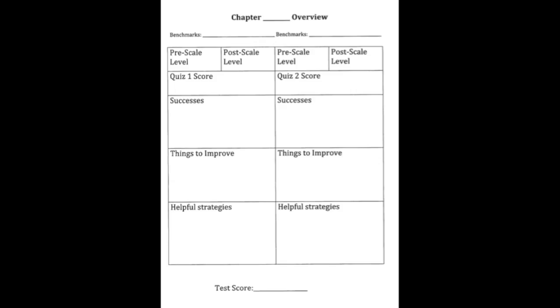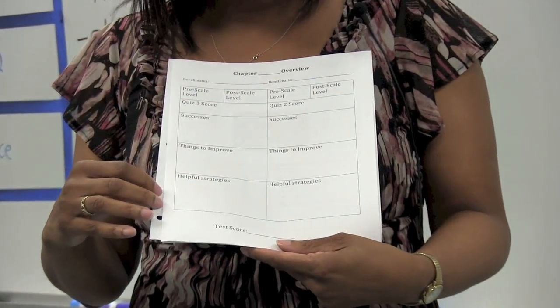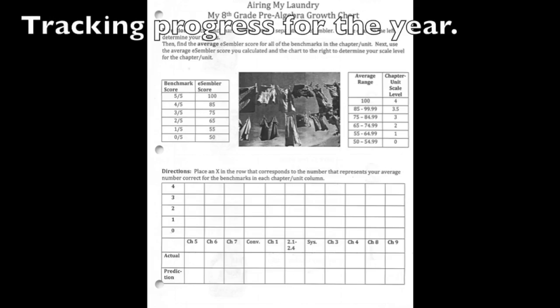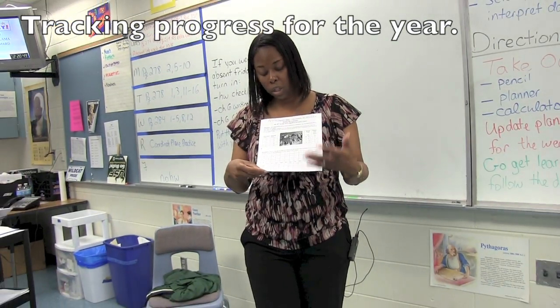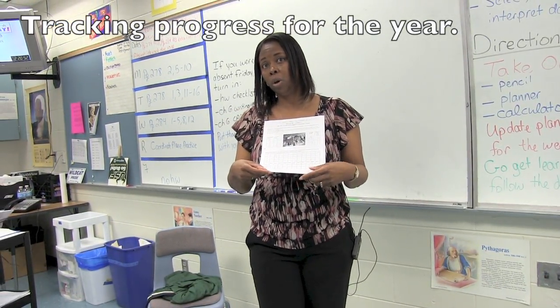After they take a quiz, they have a chapter overview in their learning journal where they record where they started and where they ended with that particular standard. They record their score, but they also have to look at what they need to improve, what they've been successful with, and what strategies are helping them. Within each chapter, there's an overview sheet where they track their progress all year long. They make a prediction as to where they think they are before the test, and after the test they record their data on a graph so they can see whether they're continually meeting standards, below standard, or somewhere in between.